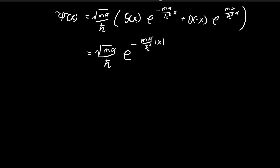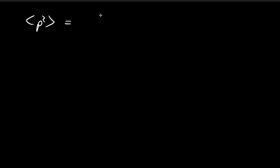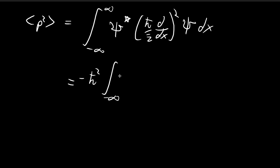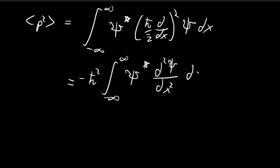Now let's find the expected value of momentum squared. Applying the definition, we have the conjugate of ξ, then the momentum operator squared applied to ξ. Pulling out the constants, we have the conjugate multiplied by the second derivative of ξ. So our focus is now on finding that second derivative.